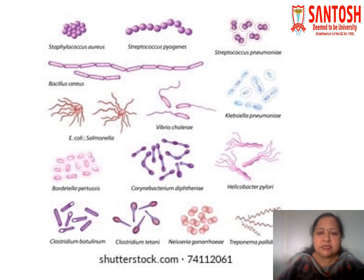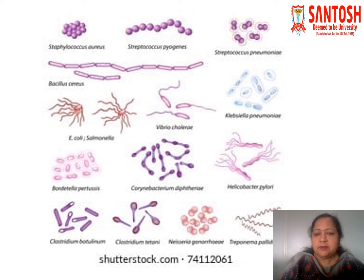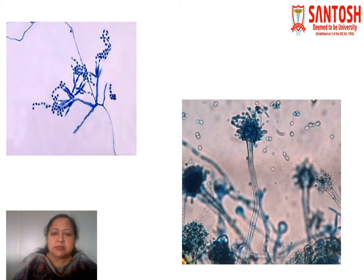Streptococcus pyogenes is cocci seen in chains, and the number of cocci — cocci means spherical structure — can be seen in numbers of 10 to 15 cocci per chain. That organism could be provisionally identified as Streptococcus pyogenes, although other species of streptococcus could also be present. Another picture shows rod-shaped bacilli along with some capsulated organisms. This is the Klebsiella pneumoniae picture, and some other bacteria images are also shown.